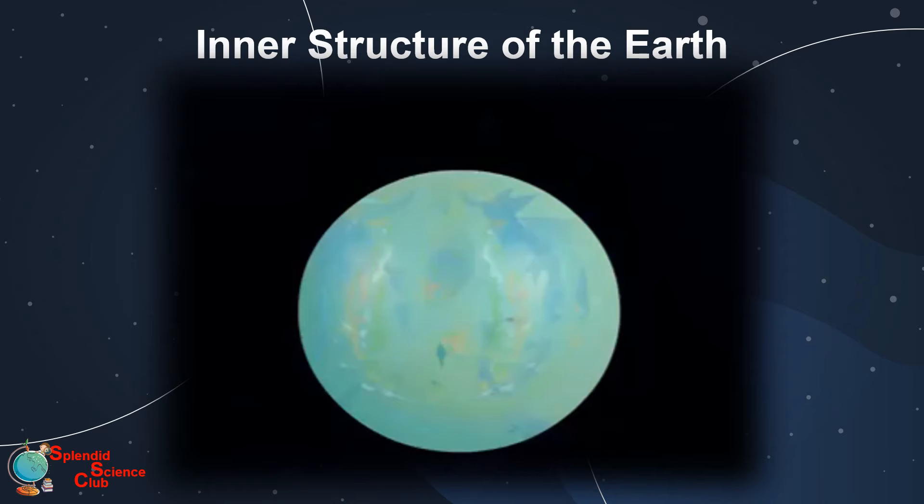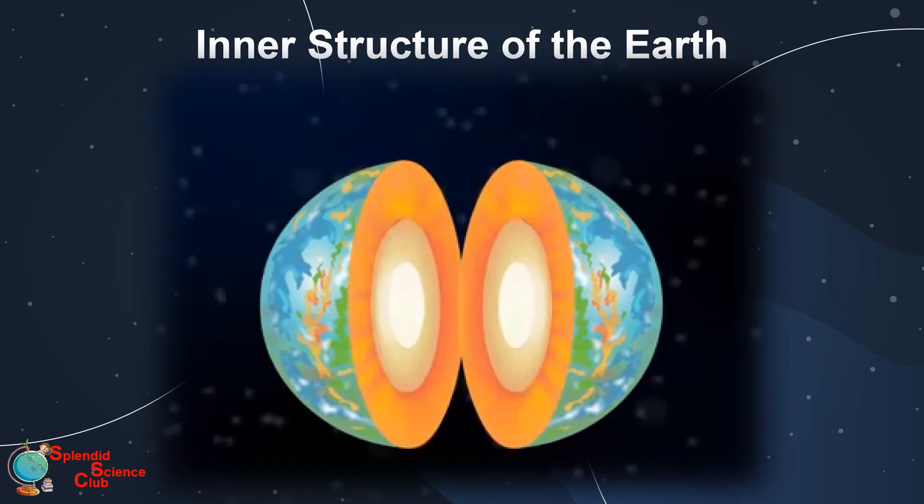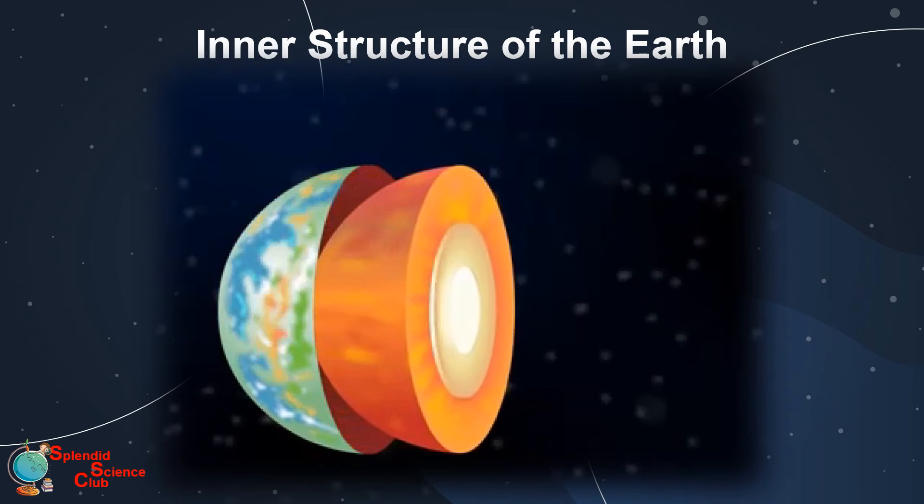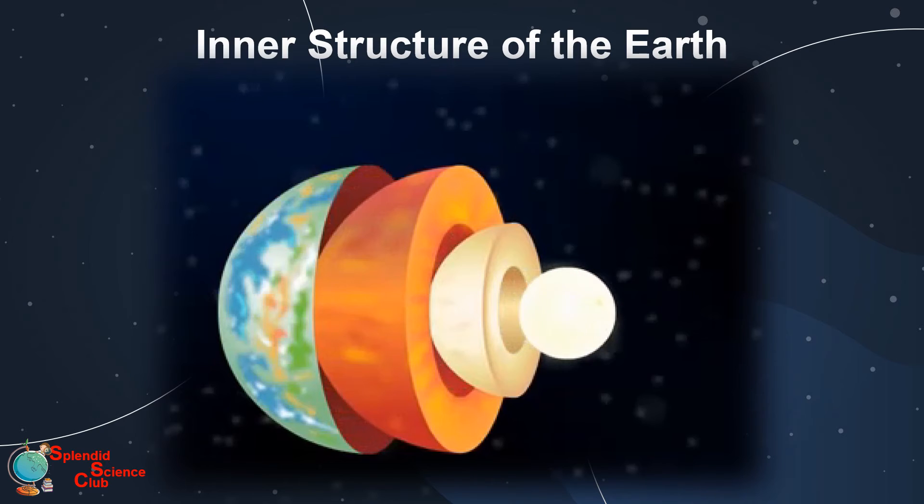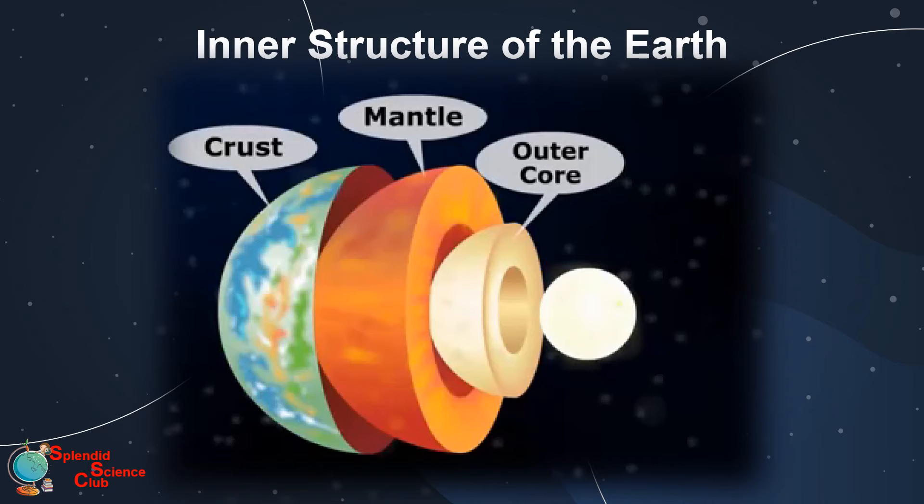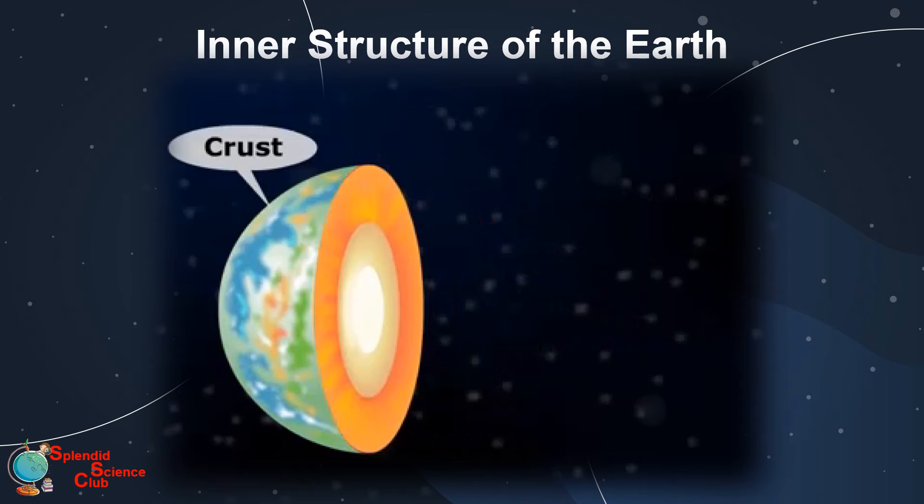Let's see the inner structure of the Earth. If the Earth is cut into hemispheres like this, you will observe four main parts. The outermost layer and the thinnest layer is called the crust. Underneath the crust lies the mantle. Core of the Earth is divided as outer core and inner core. The core is the thickest and the hottest part of the Earth. Temperature is more than 5000 Celsius.